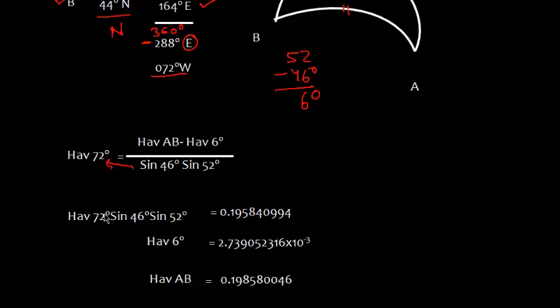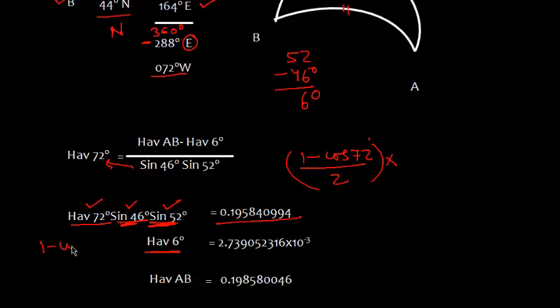Now we need to evaluate this using any scientific calculator. First of all, let me find this value hav 72. I can write like this: 1 minus cos 72 divided by 2, and then I multiply with sin 46 and sin 52. So I get this. Similarly, need to evaluate hav 6 degrees, which again is 1 minus cos 6 divided by 2, and I get 2.79052316 times 10 to the power minus 3.